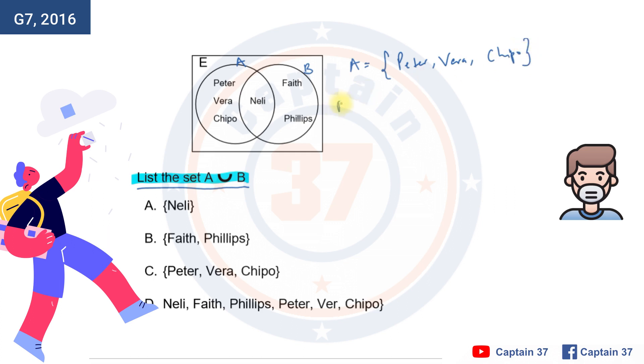In B, there is Faith, there is Phillips, and Nelly. Important to note that even in this one, which is A, there is also Nelly.